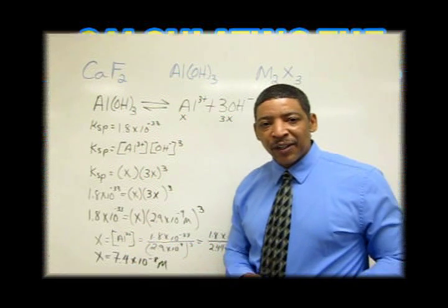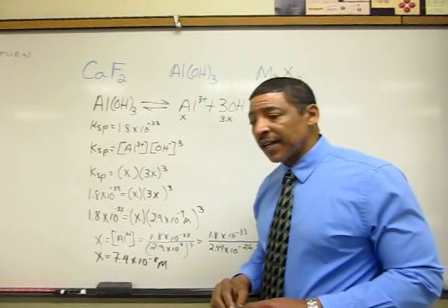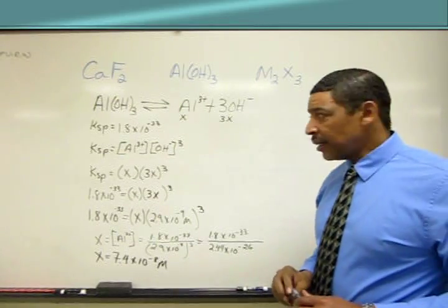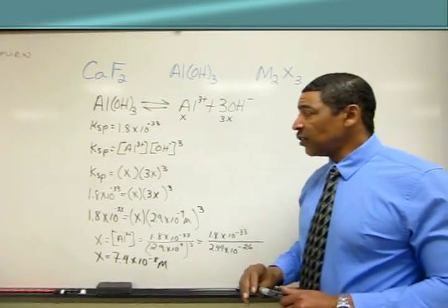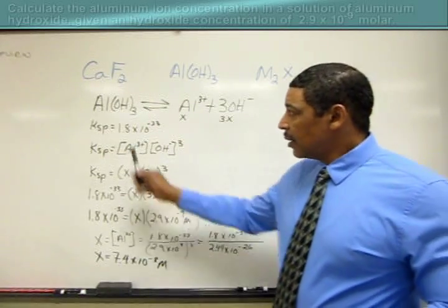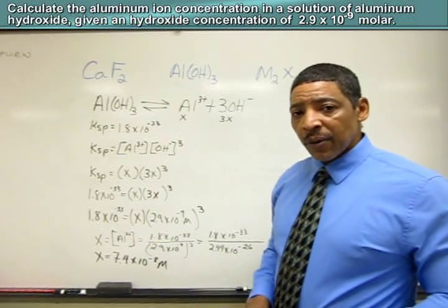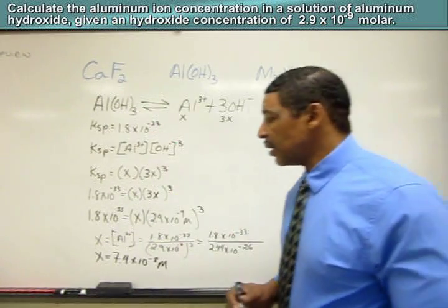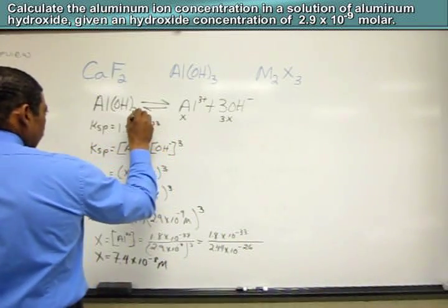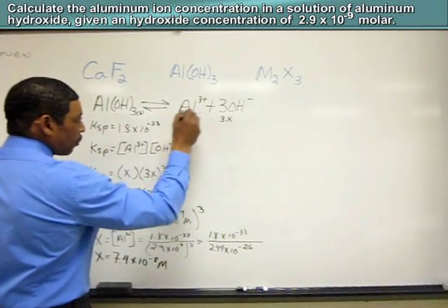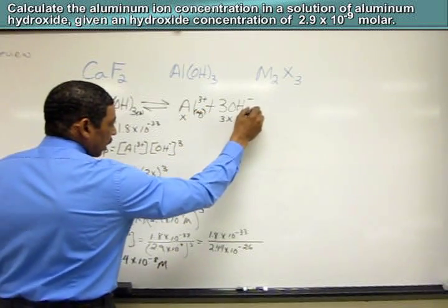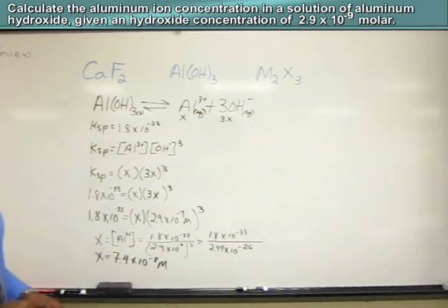A KSP expression may also be used to determine the unknown concentration of one of the products in an equilibrium equation. Consider the following sparingly soluble compound, aluminum hydroxide, where the equilibrium equation will be aluminum hydroxide solid will ionize and reach equilibrium to form aluminum ion and hydroxide anion. Of course, these ions are aqueous.